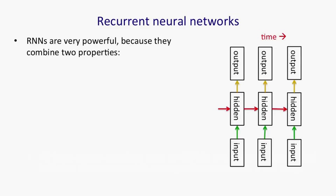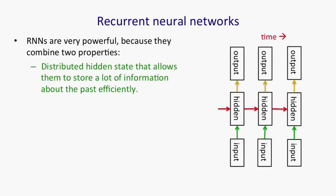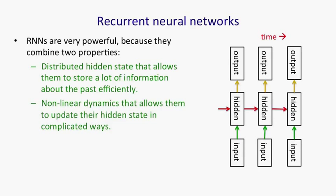That brings us to recurrent neural networks. They have a much more efficient way of remembering information. They're very powerful because they combine two properties: they have distributed hidden state, meaning several different units can be active at once, so they can remember several different things at once. They're also non-linear. A linear dynamical system has a whole hidden state vector with more than one value at a time, but those values are constrained to act in a linear way so as to make inference easy. In a recurrent neural network, we allow the dynamics to be much more complicated.